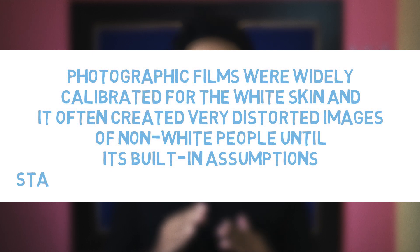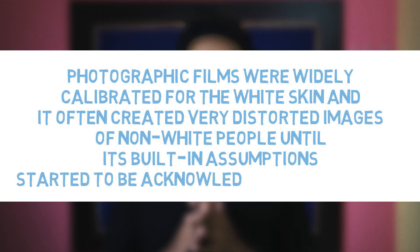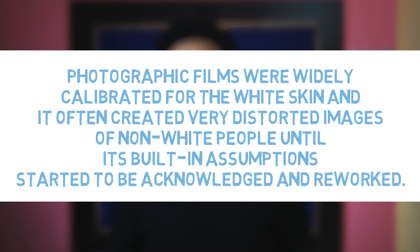To see your blood, the light must pass through your skin. This should give us pause, since a range of technologies based on color sensing is known to produce racial bias. For example, photographic films were widely calibrated for white skin and often created very distorted images of non-white people, until their built-in assumptions started to be acknowledged and reworked.